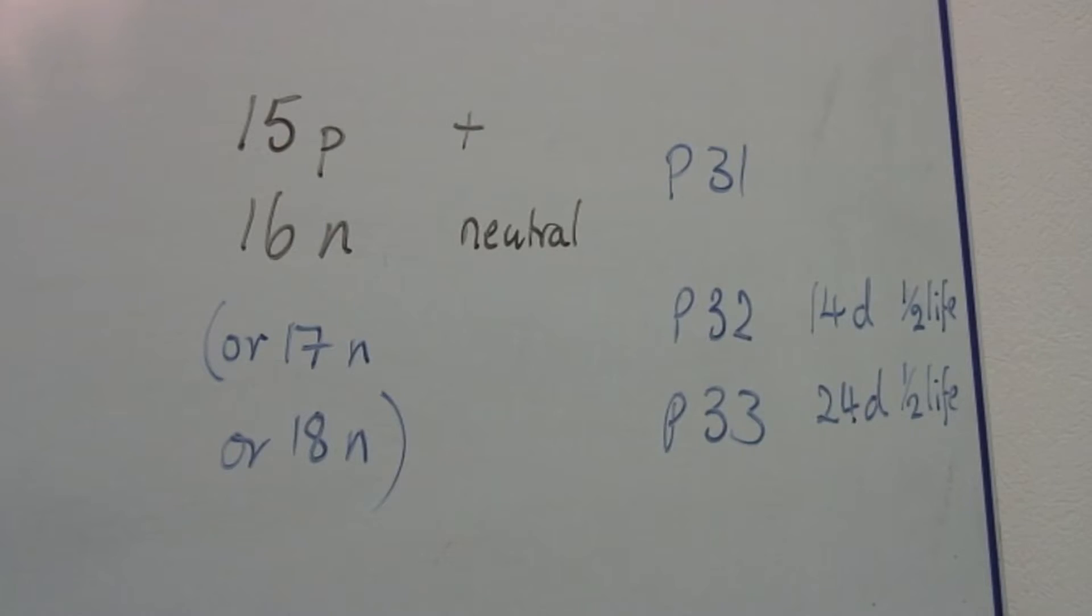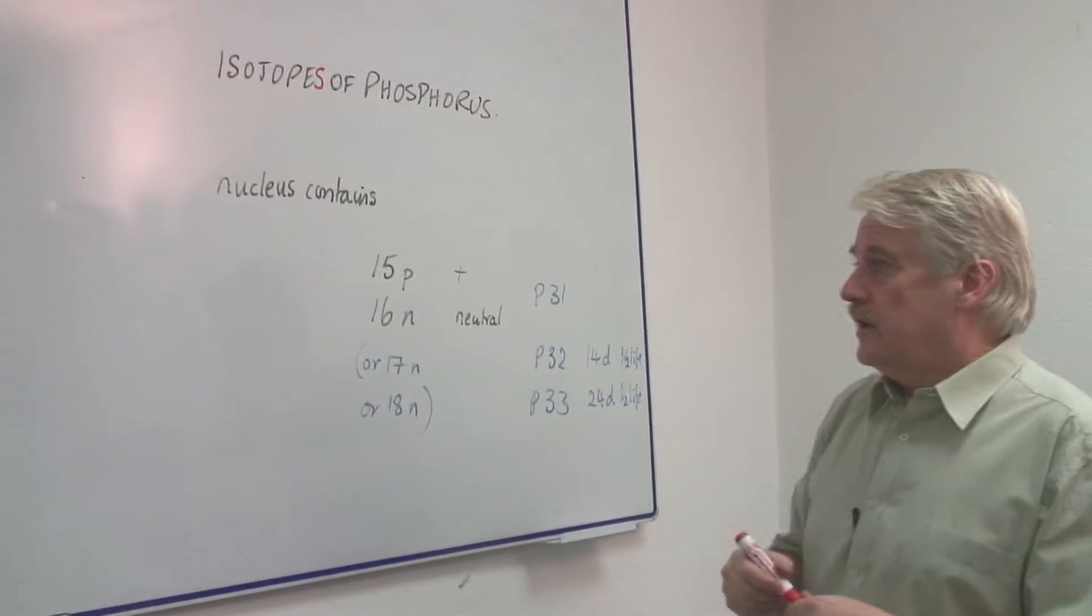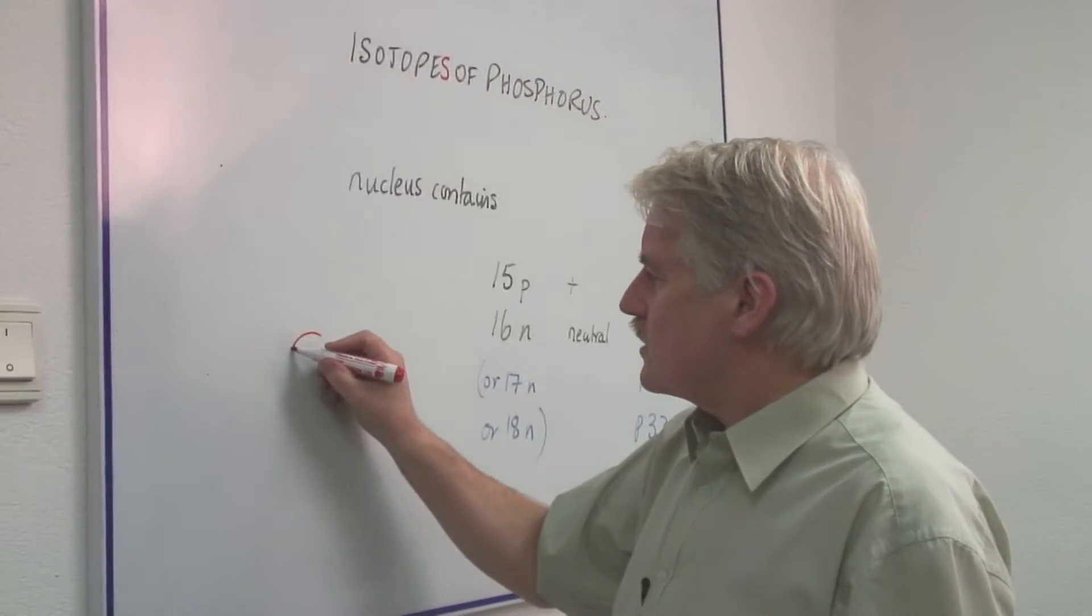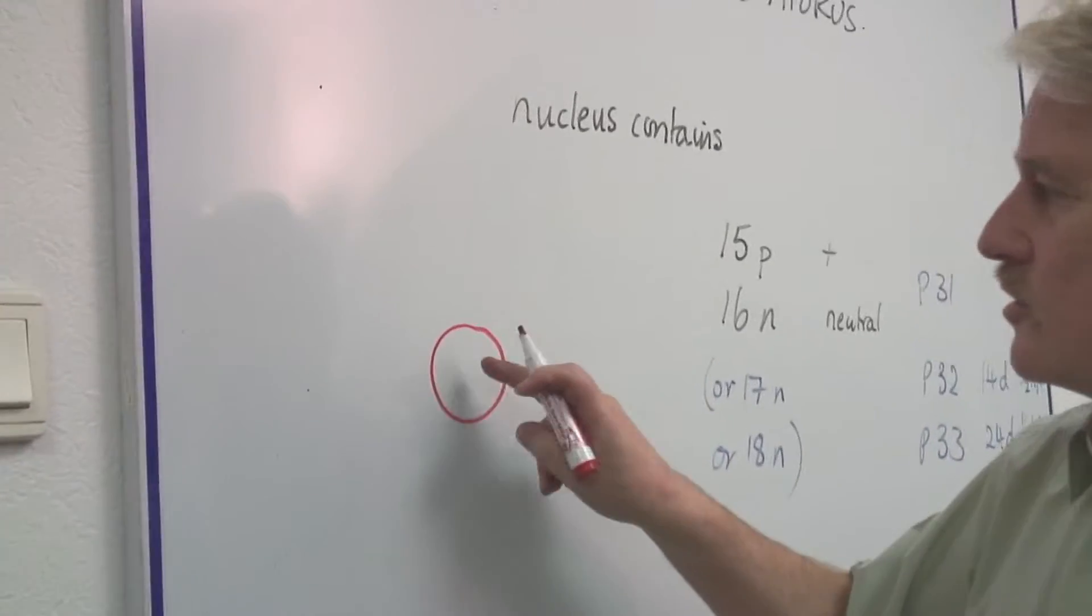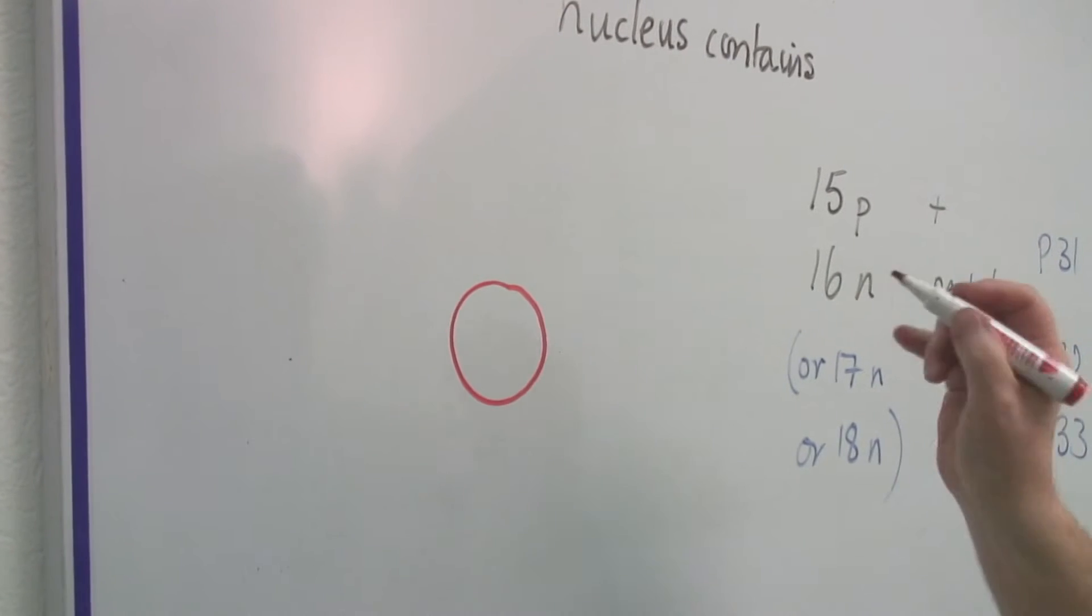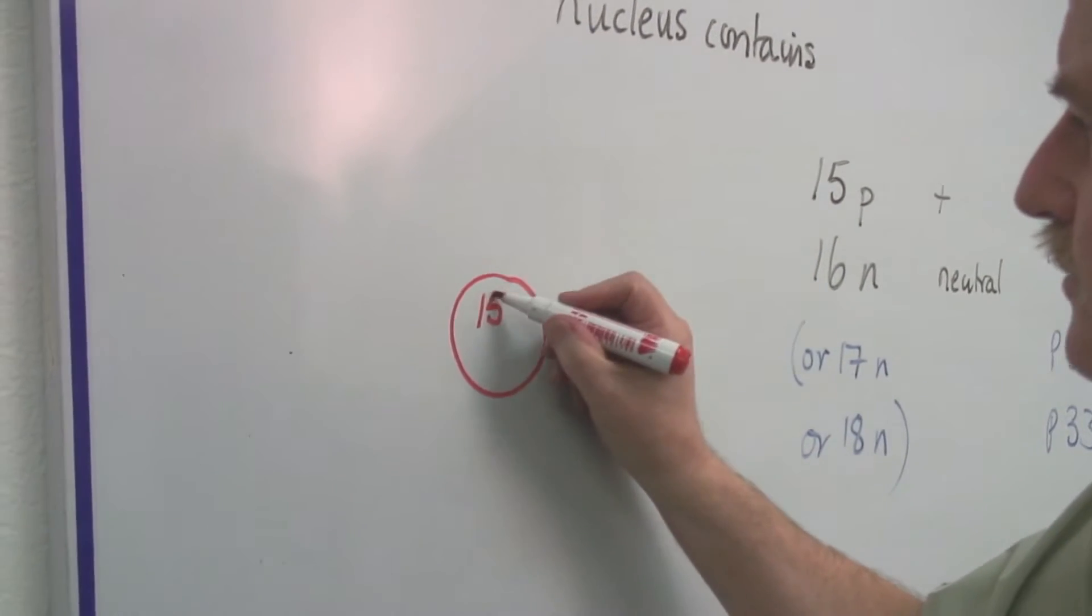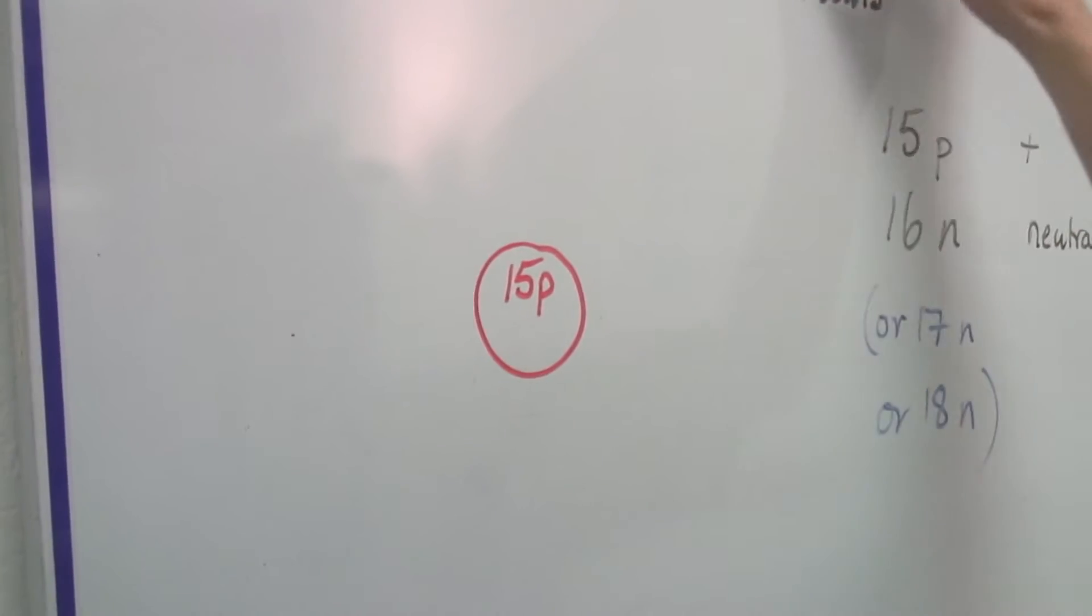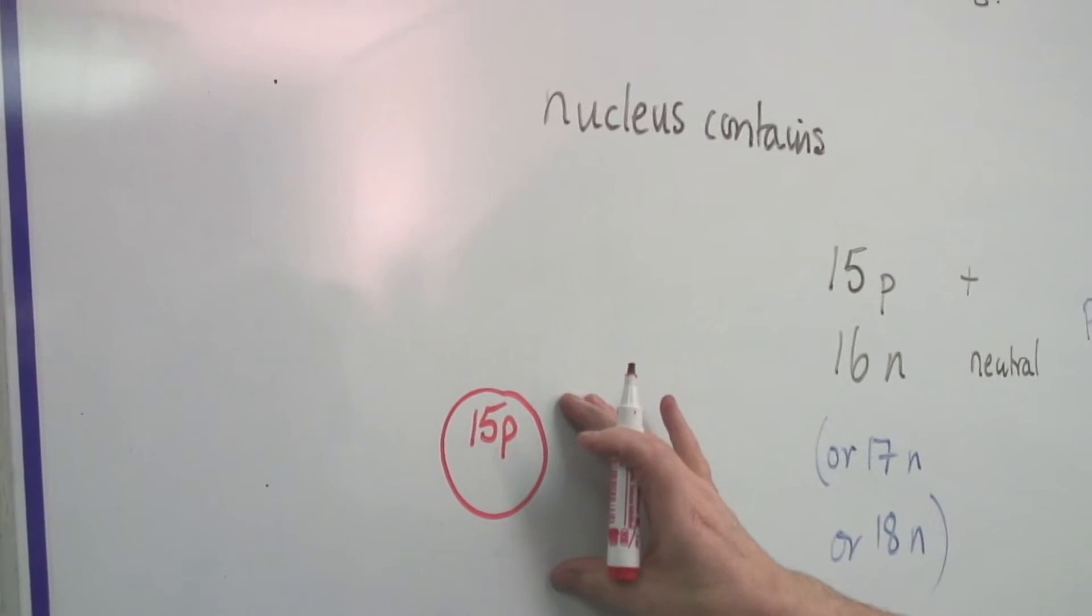Now the question is what is an isotope? First of all, within the nucleus of an atom, we draw it as a billiard ball but it isn't really like that. Within that there are fifteen protons. If it's phosphorus, there are fifteen protons.